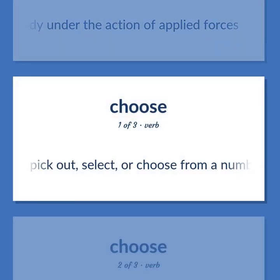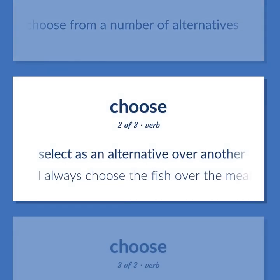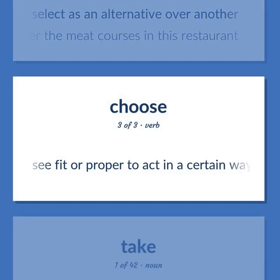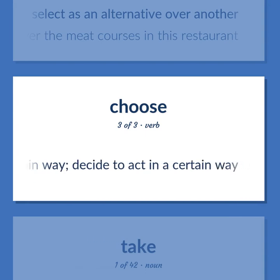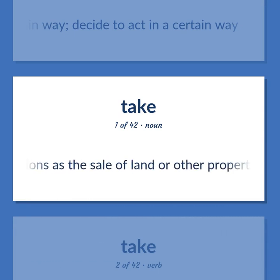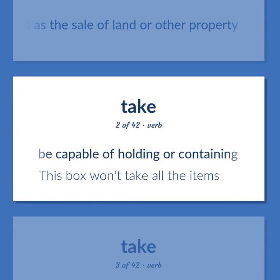Pick out, select, or choose from a number of alternatives. Select as an alternative over another. I always choose the fish over the meat courses in this restaurant. See fit or proper to act in a certain way; decide to act in a certain way. The income or profit arising from such transactions as the sale of land or other property. Be capable of holding or containing. This box won't take all the items.